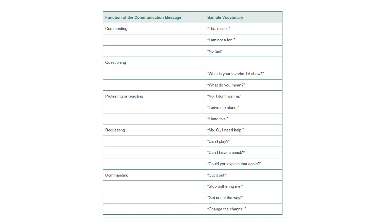Here are some vocabulary samples that communicate different types of messages. Commenting: 'that's cool,' 'I'm not a fan,' 'no fair.' Questioning: 'what is your favorite TV show?' or 'what do you mean?' Protesting or rejecting: 'no,' 'I don't want to,' 'leave me alone,' 'I hate this.' Requesting: 'I need help,' 'can I play?' 'can I have a snack?' 'could you explain that again?' Commanding: 'cut it out,' 'stop bothering me,' 'get out of the way,' 'change the channel.' You want to consider putting all these things onto a communication board so they have a well-rounded sense of communication.